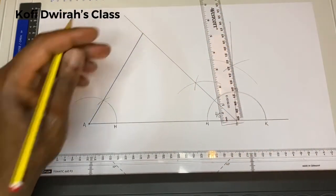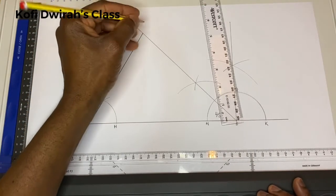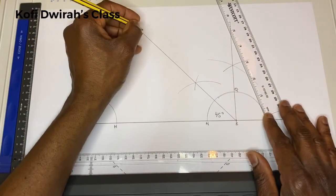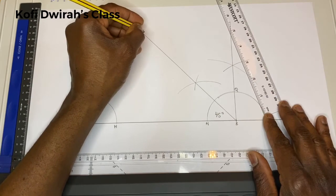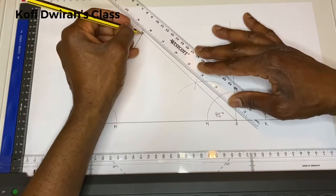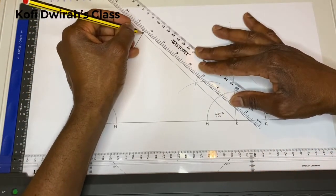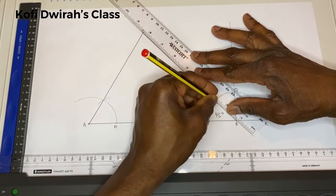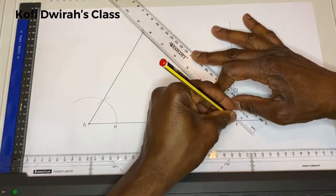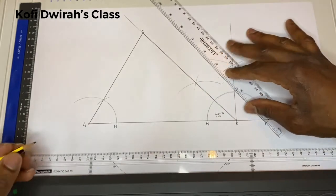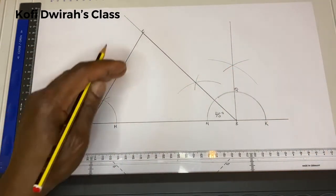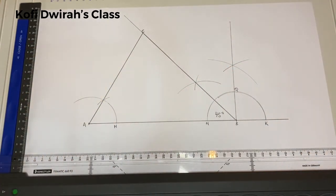The meeting point of the two lines will be point C. We now have our triangle — from C to A, A to B, and B to C. This is the completed triangle.